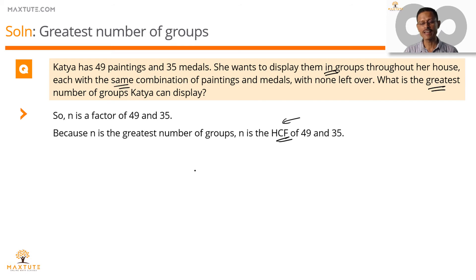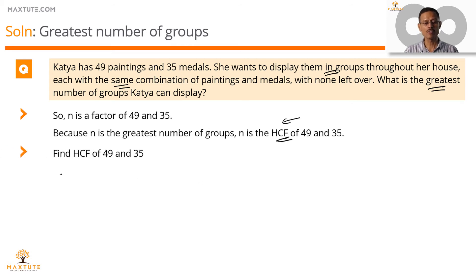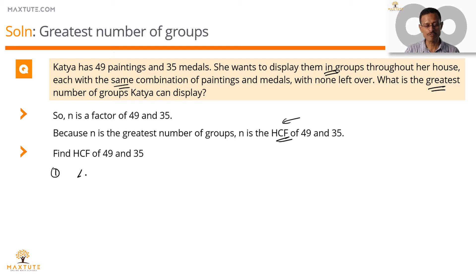Let's get started with finding the HCF — that's the last step left to finding the answer. How do you find the HCF using prime factorization? It's a three-step process. Step one: prime factorize both numbers. 49 is 7 squared. 35 is equal to 5 × 7.